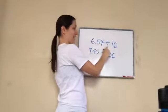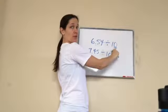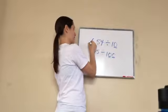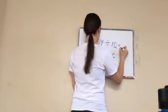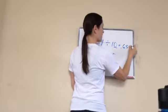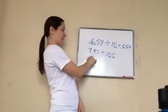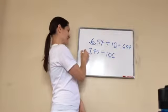So this time, how many zeros? One. So it would be 0.654. So the answer would be 0.654. That one would be 0.745. Very good.